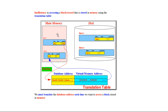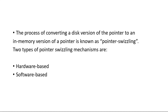Using pointer swizzling, we eliminate this inefficiency in accessing these blocks, so that we are not translating the database addresses each time using the translation table. The process of converting the disk version of a pointer to an in-memory version of a pointer is known as pointer swizzling.